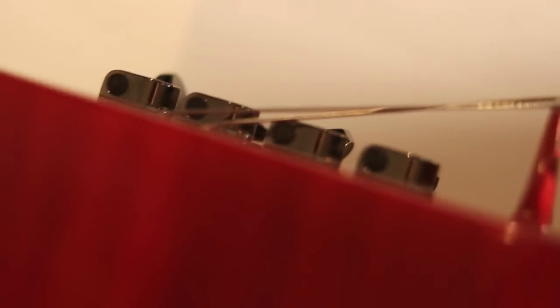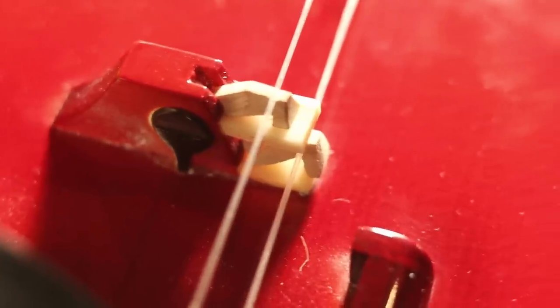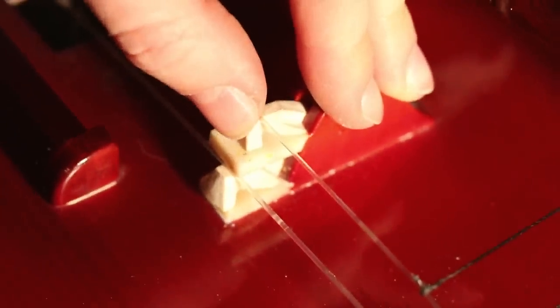Besides the melody strings, the hurdy-gurdy also has drone strings, trumpet strings and sympathetic strings. Drone is a low constant sound which you can use as a harmonical basis for your melody. Trumpet string is the rhythm string and it sounds like this. It is a gut or nylon string sitting on a buzzing bridge. It is a relatively loose part and it vibrates a lot which results in this buzzing sound.